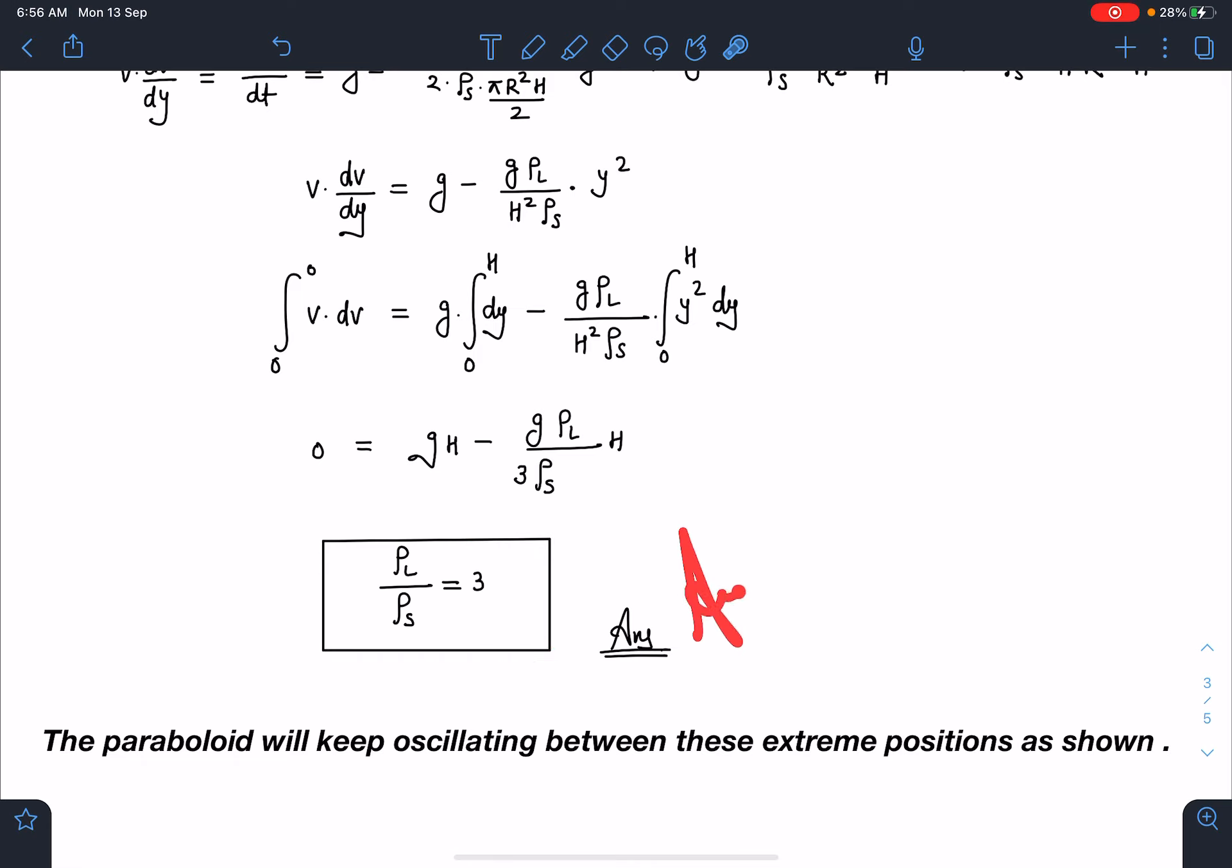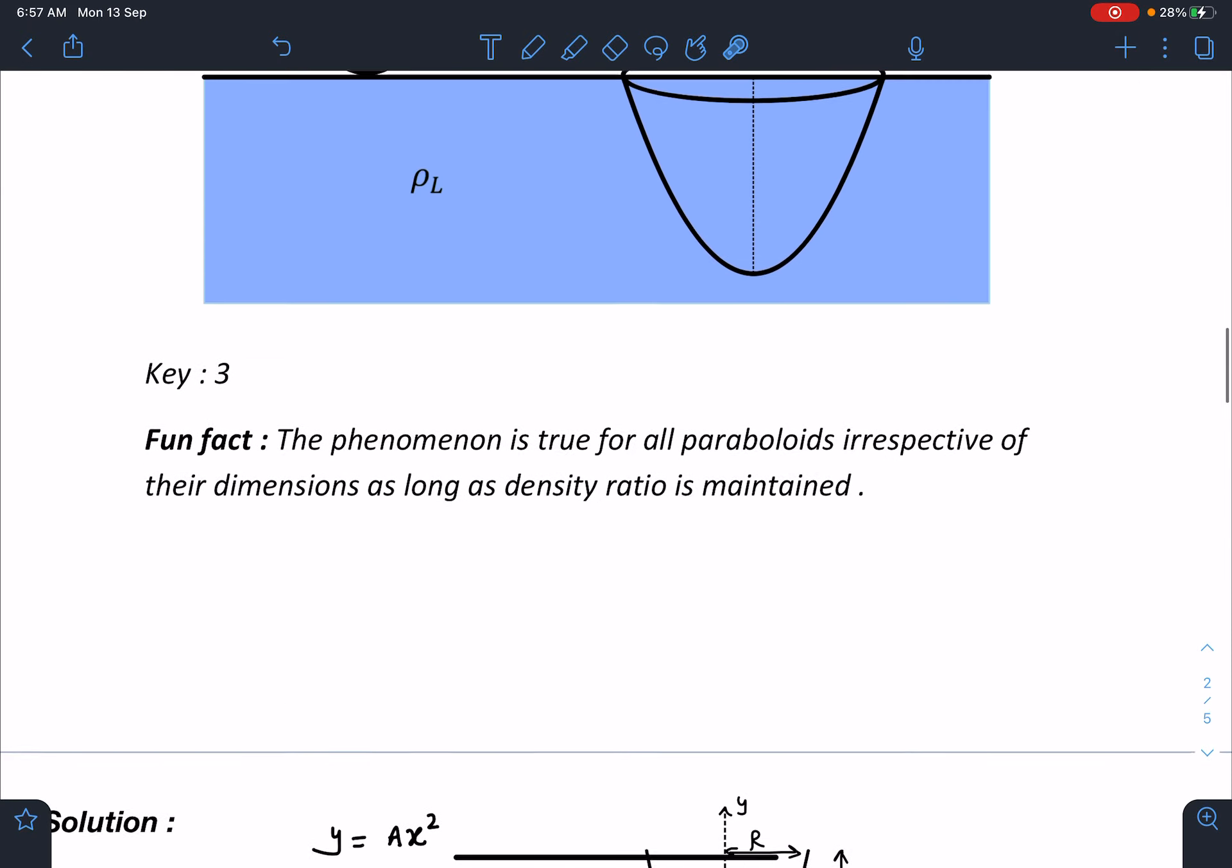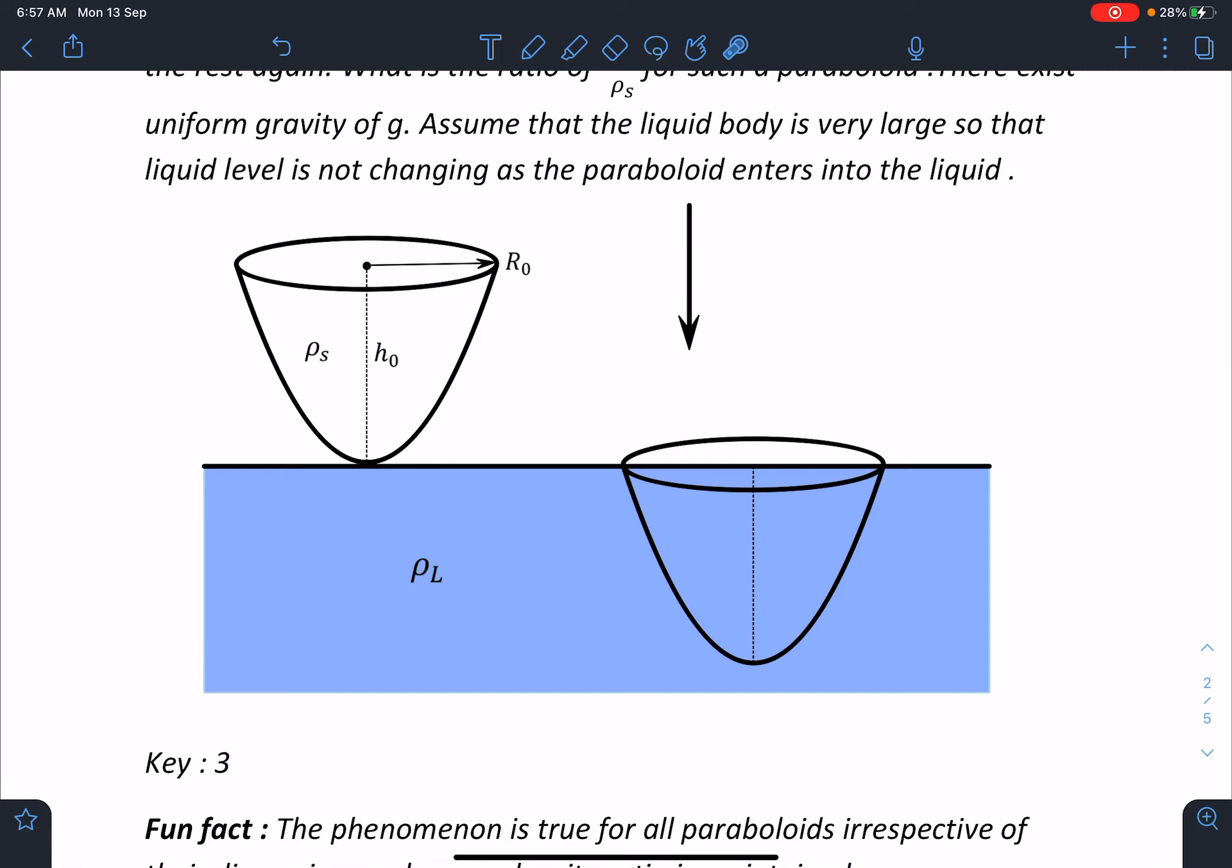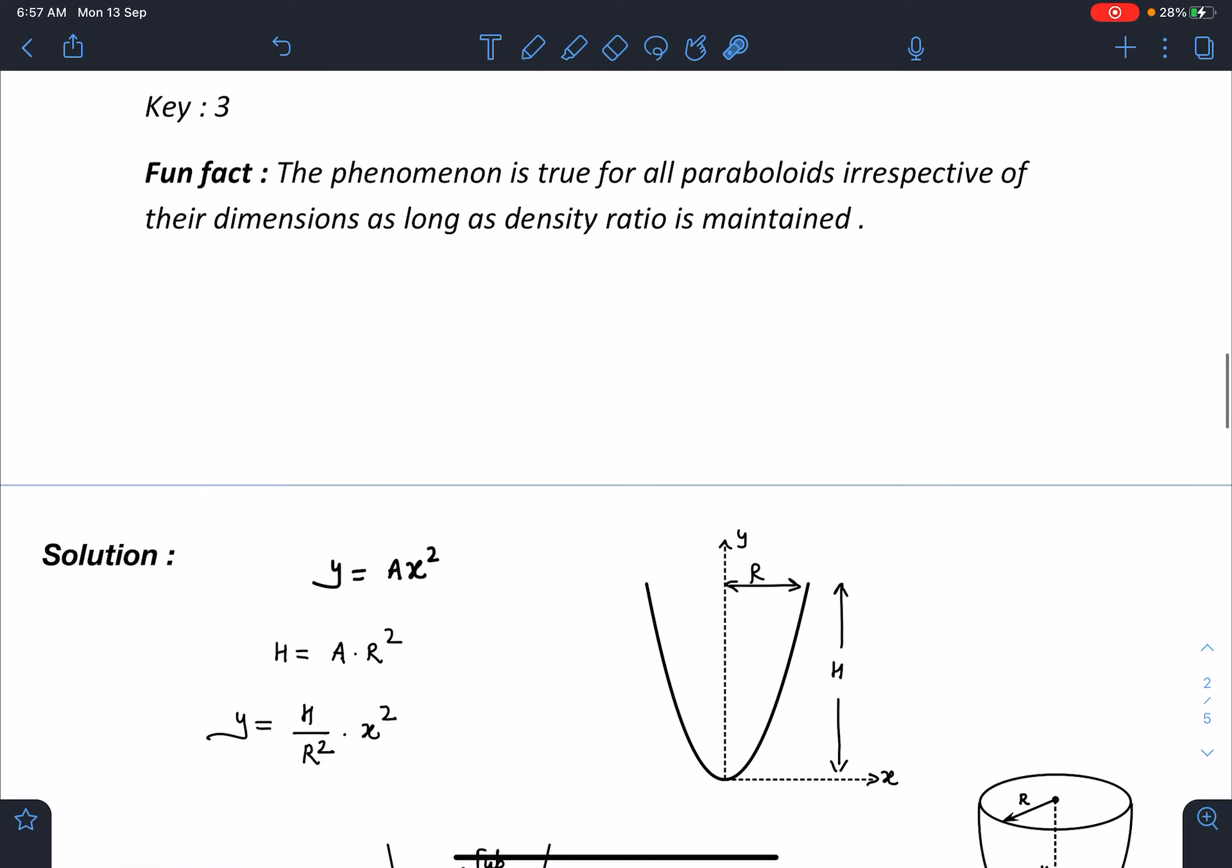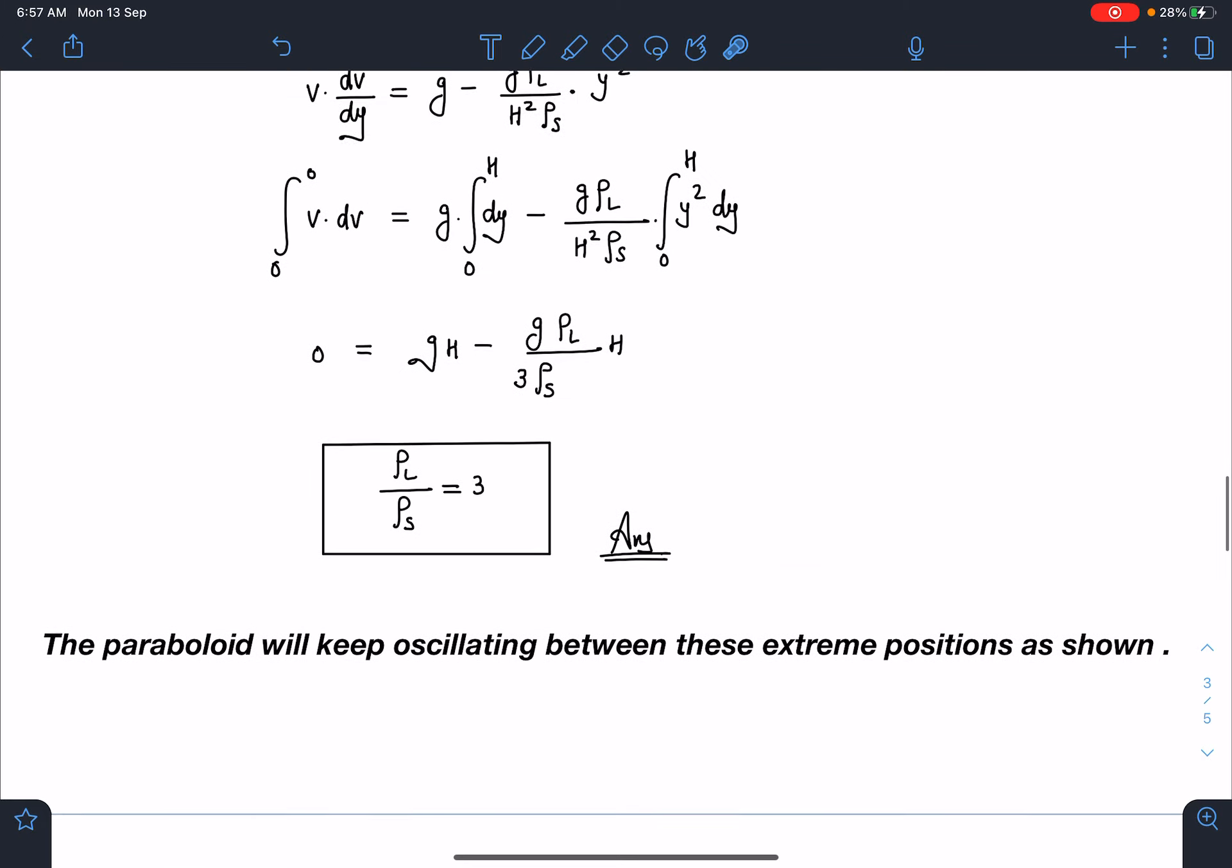And this paraboloid will keep oscillating between these two extreme positions which I have shown here. So I think you can understand. So it is a very strange property of this paraboloid that irrespective of its size it will keep oscillating like this.